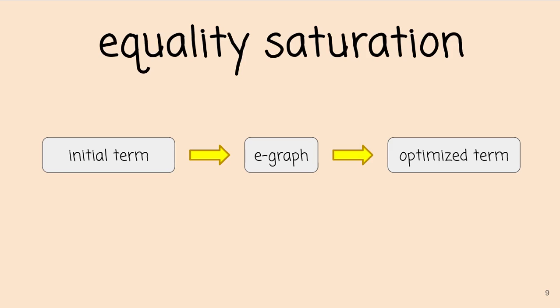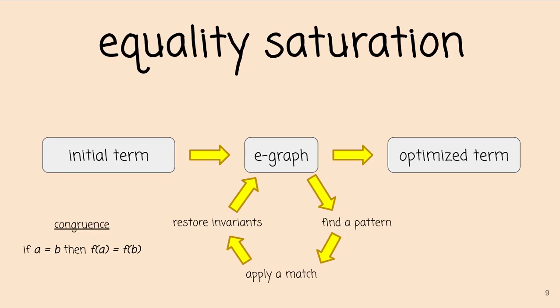So let's look at this inner loop a little more. The first thing it's going to do is find a left-hand side pattern, or find an instance of a left-hand side somewhere in the e-graph. And then it's going to stamp out the right-hand side of that rewrite and add it to the same e-class.